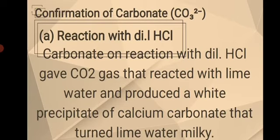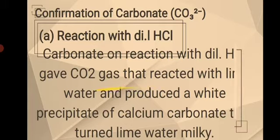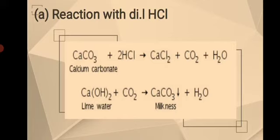For the confirmation of carbonate or CO₃²⁻, the first test is the reaction with dilute hydrochloride. Based on the theory cited from olabs.com, carbonate on reaction with dilute hydrochloric acid gives carbon dioxide gas, which reacts with lime water and produces a white precipitate of calcium carbonate, turning lime water milky. In the experiment, after adding dilute hydrochloric acid to a portion of the salt solution, effervescence and evolution of a colorless and odorless gas was observed.